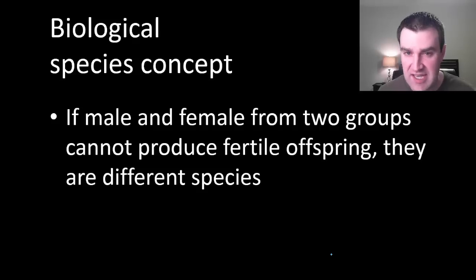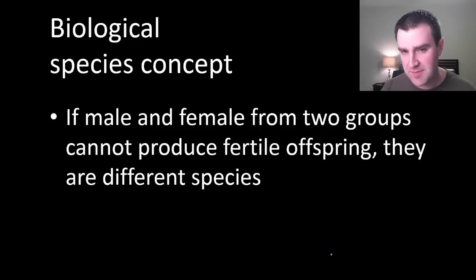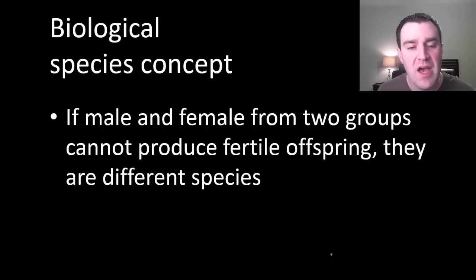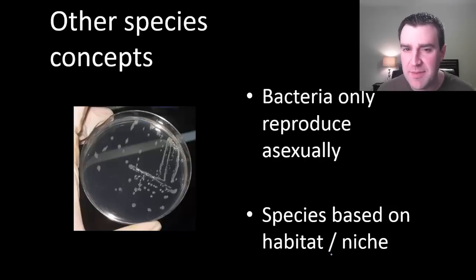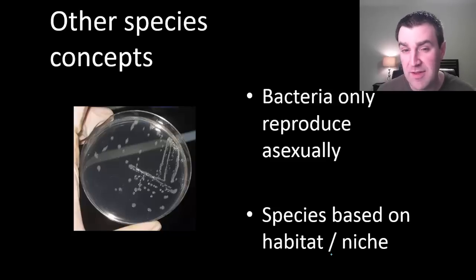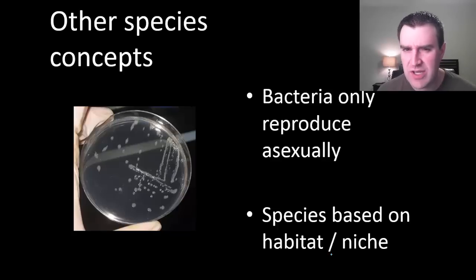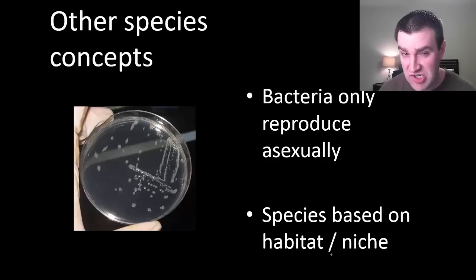This is the biological species concept — a simple way to draw a line between two groups and say they are different species. However, there are cases where we can't apply that definition. Bacteria, for example, cannot reproduce sexually — they only reproduce asexually through binary fission. So to declare different groups of bacteria as different species, we look at where they live, their habitat, or what they do in that area, their niche, and if those are really different, we can declare them different species.